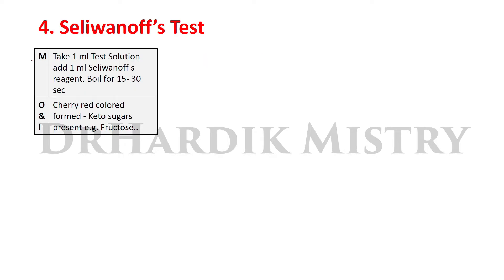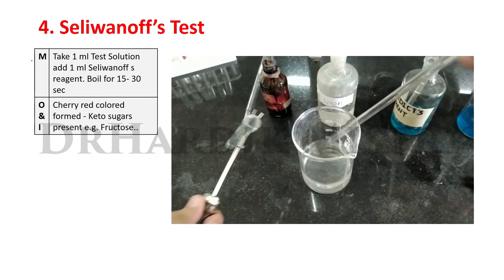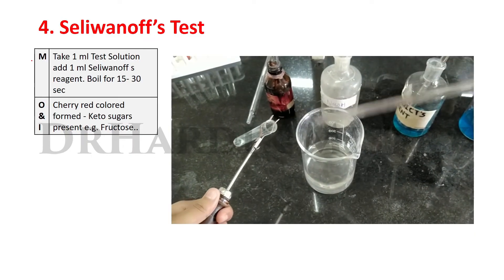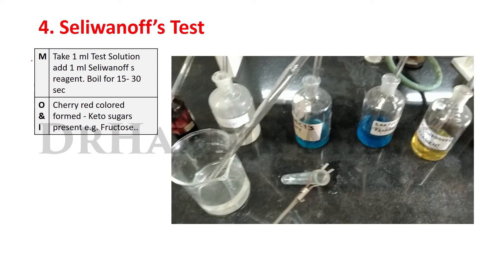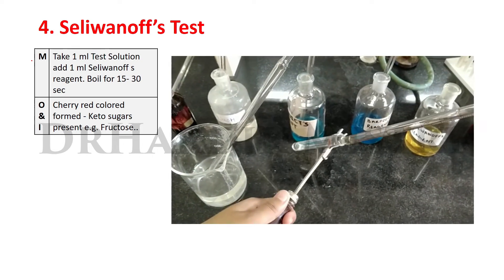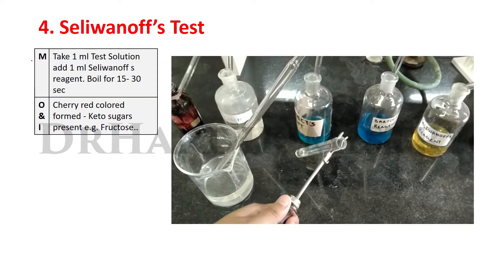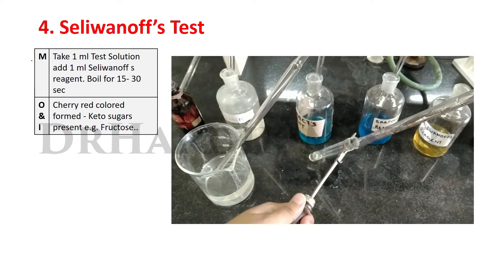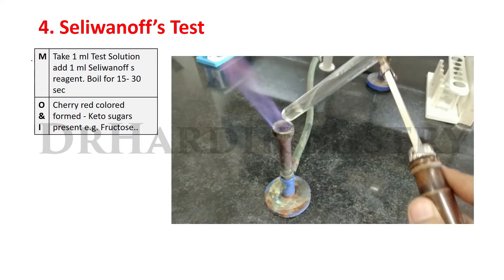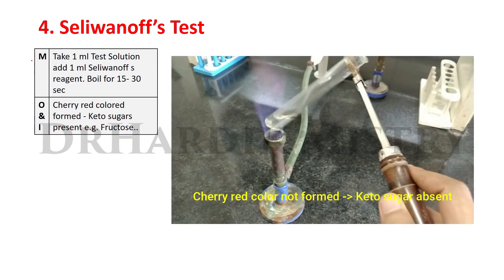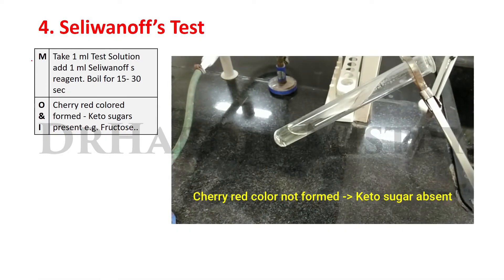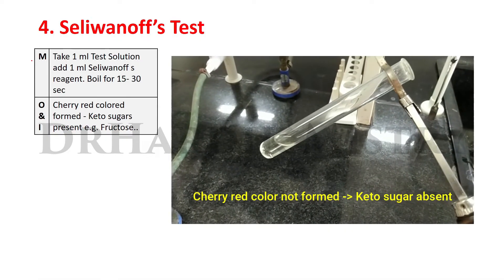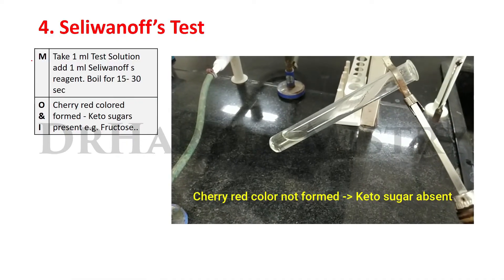Method, observation, and inference of Selivanoff test. Method: Take 1 ml test solution. Add 1 ml Selivanoff's reagent. Boil for 15 to 30 seconds. Observation: Cherry-red color formed. Inference: Keto-sugars present, e.g., fructose. That is the Selivanoff test.